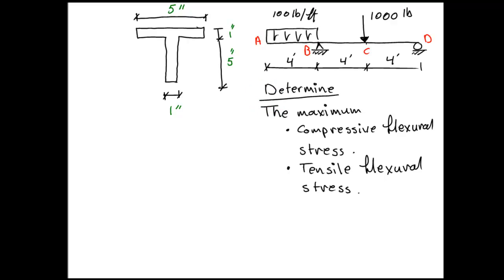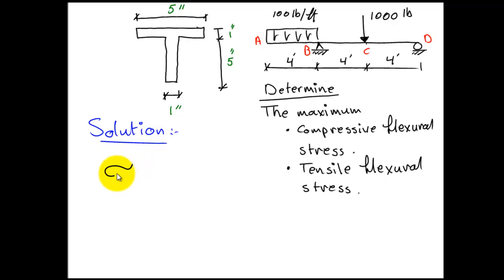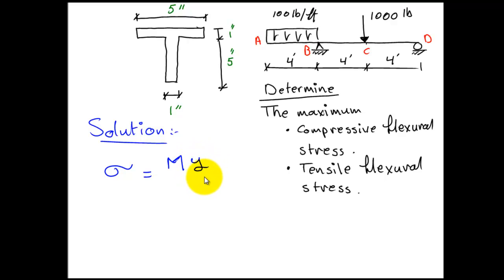The stress in a cross-section equals the moment at the point of interest times y, which is the distance from the neutral axis to the compression or tensile face — so either the top fiber or the bottom fiber of the beam — divided by the moment of inertia.